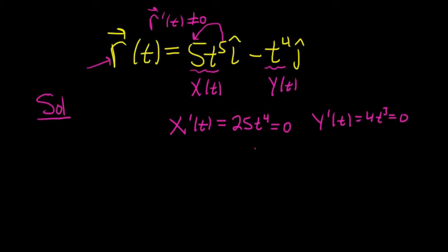So here, if you solve this, you simply get zero. Likewise here, you simply get zero. You just divide by 4, take the cube root. So it's smooth everywhere except when t is equal to zero. So it's going to be smooth on negative infinity to zero, union zero to infinity.